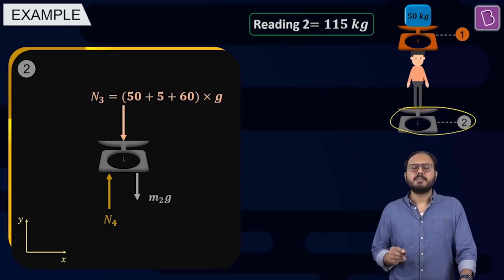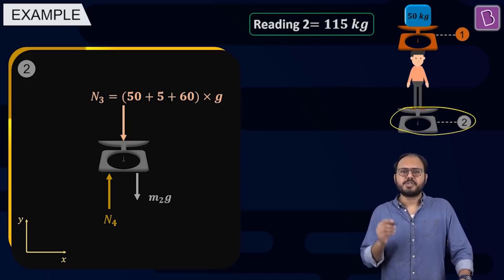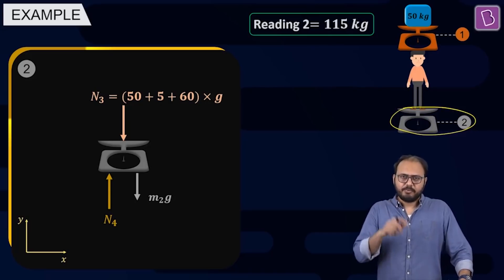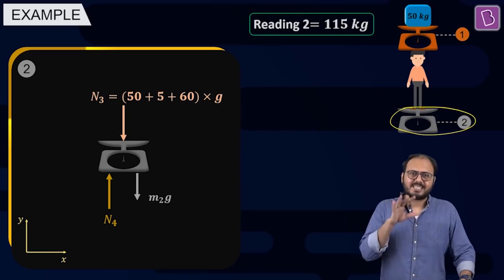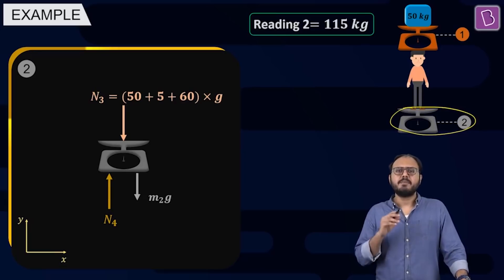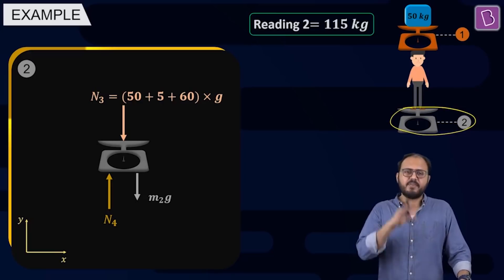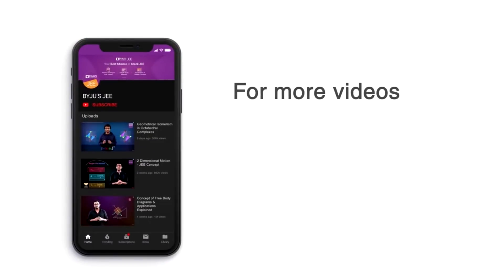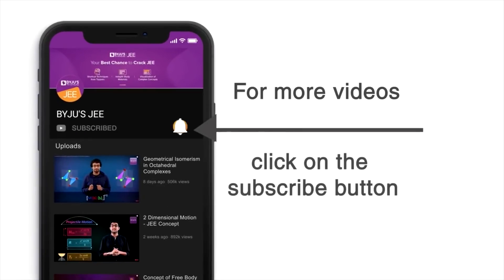What does the weighing machine measure? Weighing machine measures the force with which it is being pressed down. Weighing machine measures the normal reaction of the body or the bodies on the weighing machine. For more videos and live lectures on the JEE, click on the subscribe button now. Thank you all.